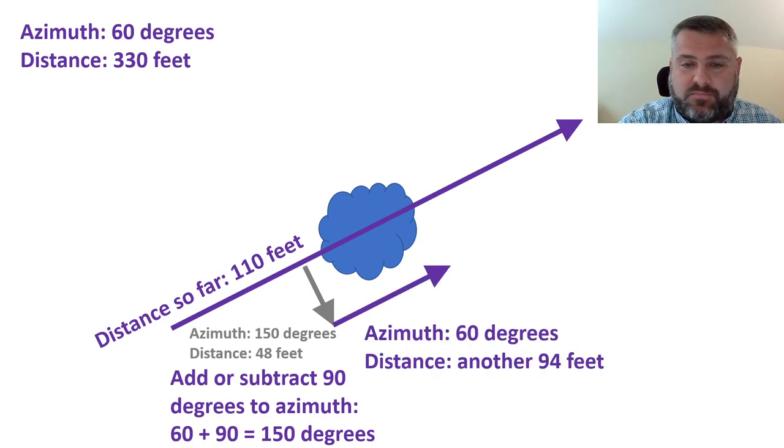Then you continue back along your original azimuth. You really have to know the distance you go here. You can go any amount of distance, but the important part is that it's less than the remaining distance you have on this traverse and that you know what that distance is. In this example it takes them about 94 feet to clear this obstacle.